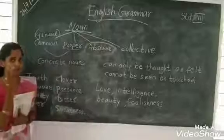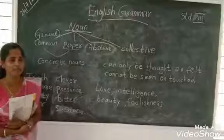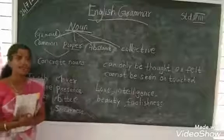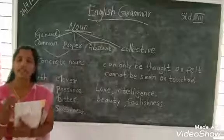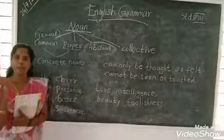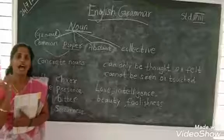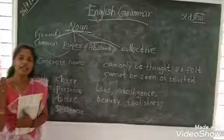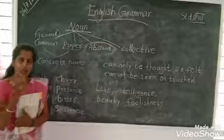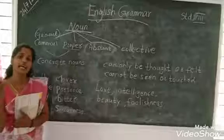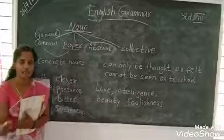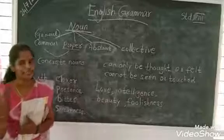There are two types of noun. What is a noun? What is the noun? Noun is the name of a person, place, animal or thing. Person, place, animal and thing.